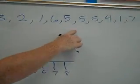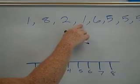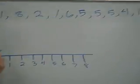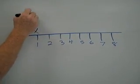So in this set of data, 1 occurs 1, 2, 3 times. So above the 1 you will see 3 x's.